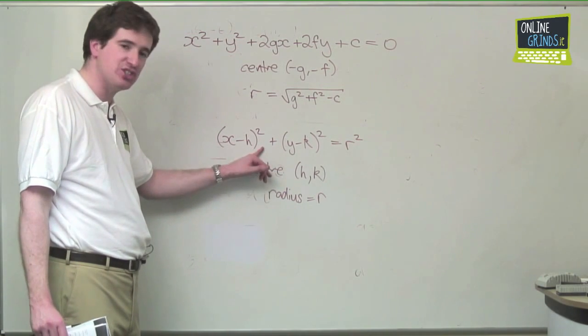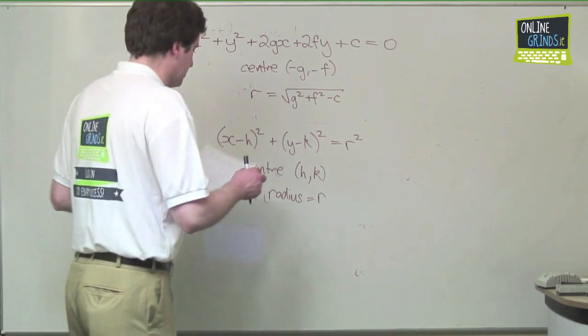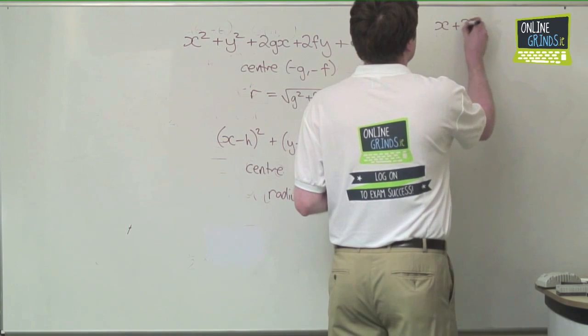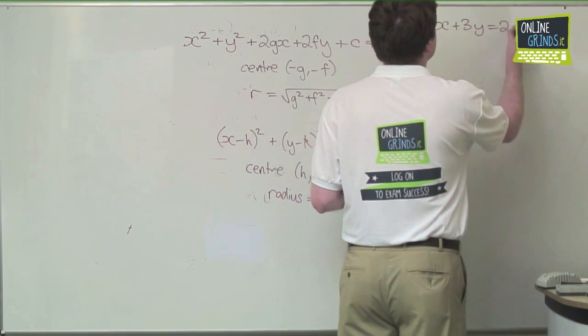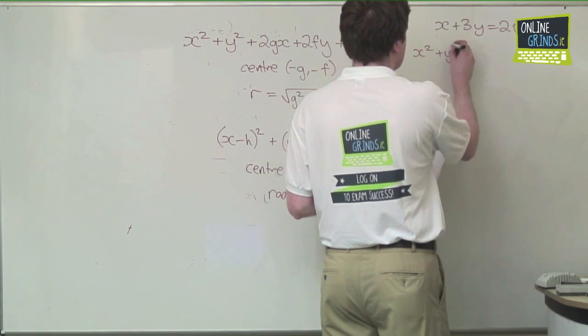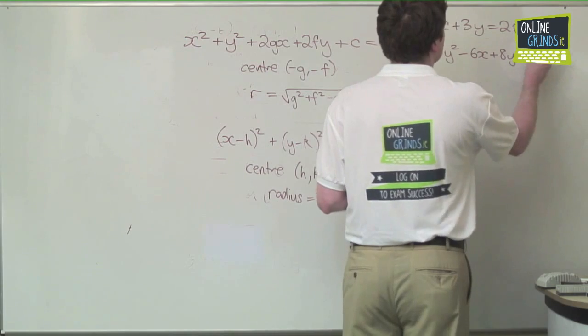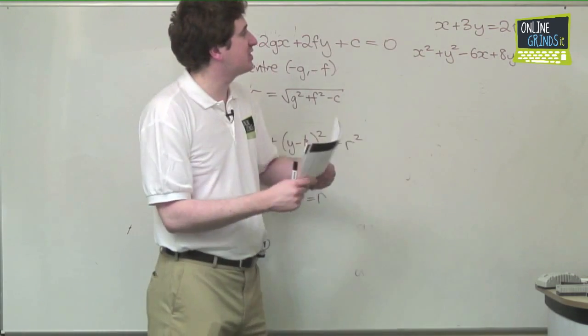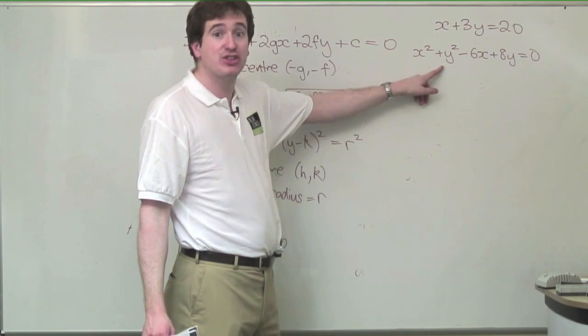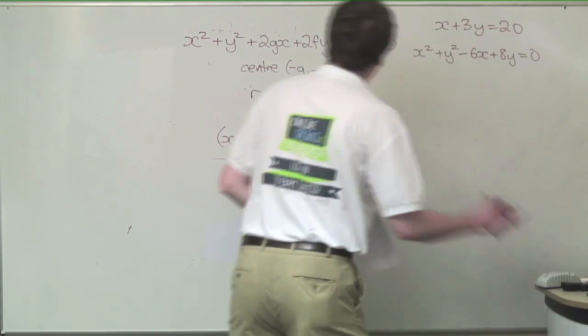This problem asks us that we have a line x plus 3y equals 20, and we have another circle x squared plus y squared minus 6x plus 8y equals 0. They tell us that this line intersects with this circle at two points, and that those two points constitute the diameter of the circle we're looking for.